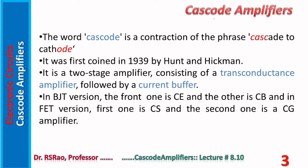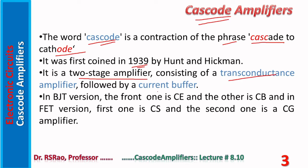A few statements regarding the origins of the cascode structure. The word 'cascode' is a contraction of the phrase 'cascade to cathode.' It was first coined in 1939 by Hunt and Hickman. Note that cascode and cascade are different terms. A cascode is a two-stage amplifier: the first one is a transconductance amplifier and the second one is a current buffer.